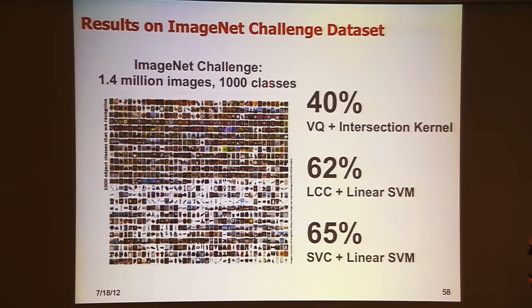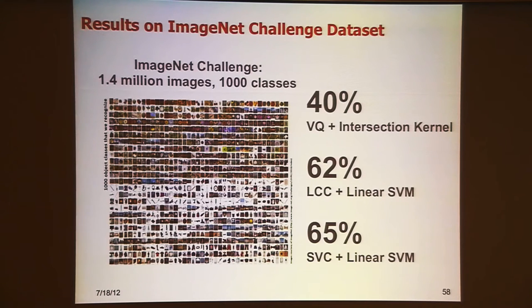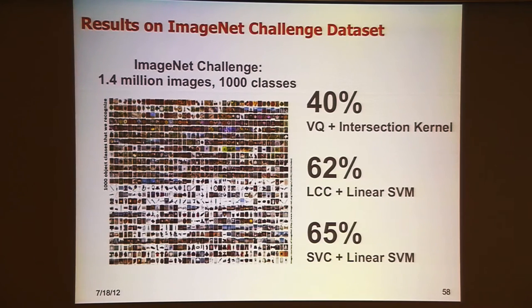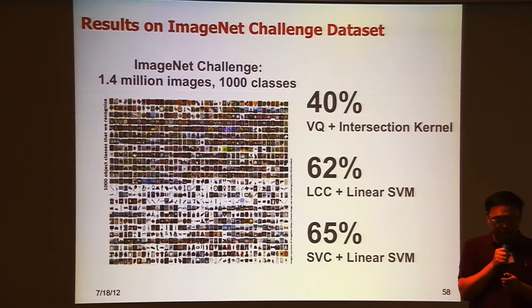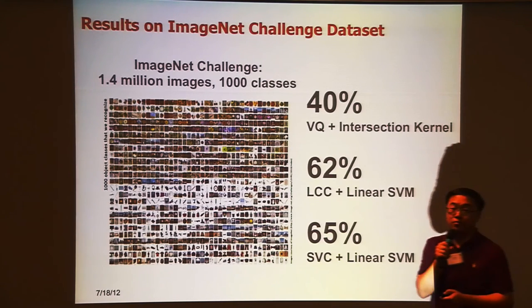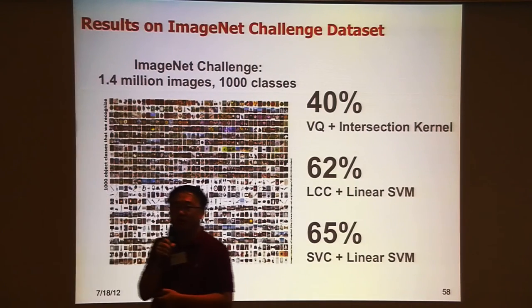We implemented these methods in the 2010 ImageNet challenge — the first ImageNet challenge. The dataset contains 1.4 million images and 1,000 classes. Traditional methods like bag-of-words with spatial pyramids get 40% top-five hit rate. We applied both methods — super vector coding and LCC coding, both with linear SVM — and got much better results.